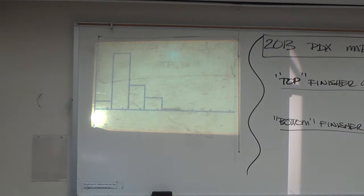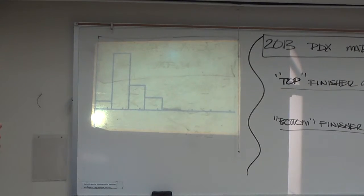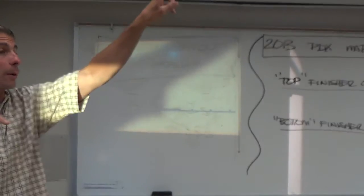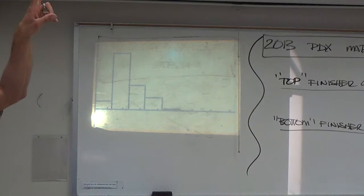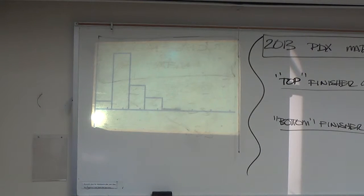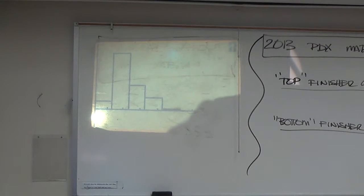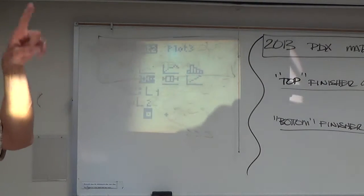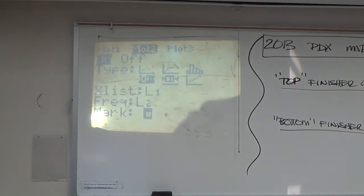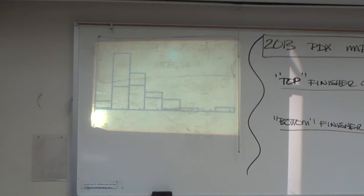Candace says hers doesn't look like that. Let's take a look. After we get graph number two turned on — I want to get graph number two turned on as well. Now here's a problem. I'm going to show you something real quick. I'm going to turn a second histogram on. The second histogram is going to be the bottom finishers. Don't do this right now — we're going to get you guys caught up in a second. Here's why you don't do it this way.